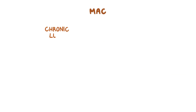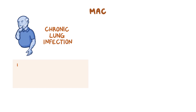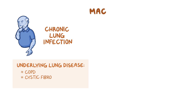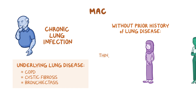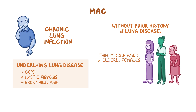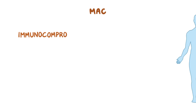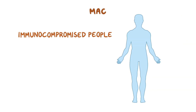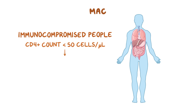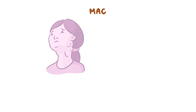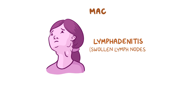MAC usually causes chronic lung infection in people who already have an underlying lung disease, such as chronic obstructive pulmonary disease, cystic fibrosis, or bronchiectasis. They can also affect people without a prior history of lung disease, especially in thin, middle-aged, or elderly females. People who are immunocompromised, like those with AIDS who have a CD4 cell count below 50 cells per microliter, are more likely to develop disseminated infection. In young children, MAC can cause lymphadenitis, or swollen lymph nodes.